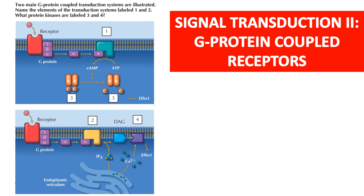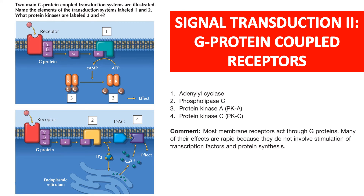G-protein coupled receptors: two main G-protein coupled transduction systems are illustrated. Number 1 is adenylyl cyclase and number 2 is phospholipase C. Protein kinase labels 3 and 4: number 3 is protein kinase A and number 4 is protein kinase C. Most membrane receptors act through G-proteins. Many of their effects are rapid because they do not involve stimulation of transcription factors and protein synthesis.